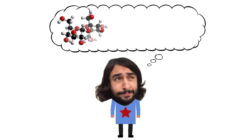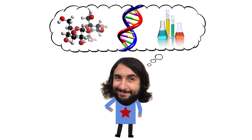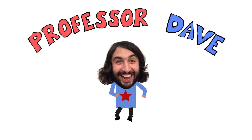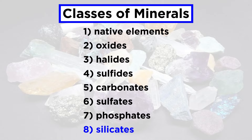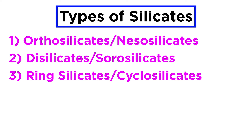He knows a lot about the science stuff — Professor Dave Explains. In the previous tutorial we began learning about the most important class of minerals, the silicates, and we examined three of the silicate subclasses: orthosilicates, disilicates, and cyclosilicates.